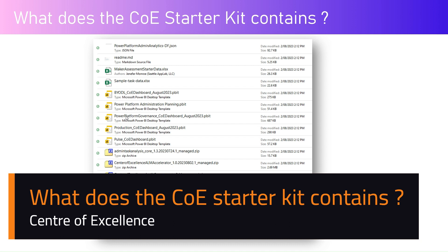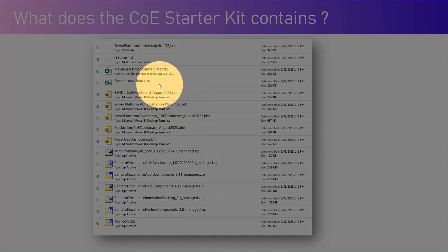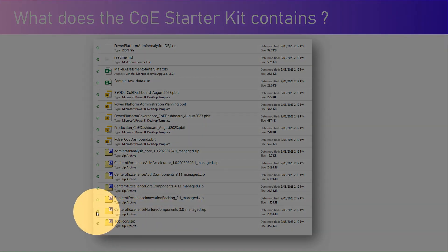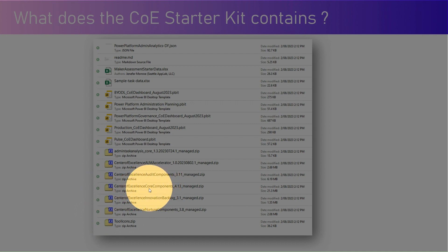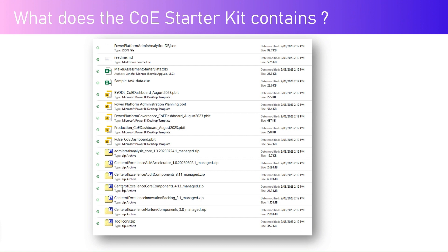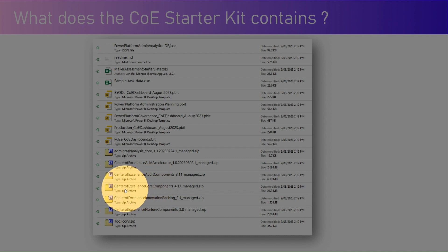In this video, I'm going to talk about what the CoE Starter Kit contains. When you download the zip file from the Microsoft site, you'll be presented with multiple zip files within the solution zip file. Those zip files contain solution components. The first one I'm going to talk about is the core component, which is one of the main components. It contains a lot of apps, reports, and flows that guide you through the process of setting up a Center of Excellence Starter Kit.